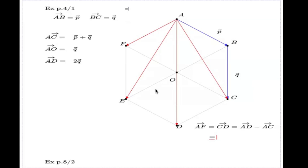You can continue this because we know the expression for AD and the expression for AC. AD was 2q, take AC was p plus q, and we end up with q take p.